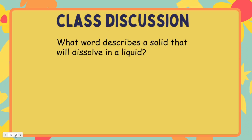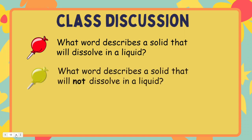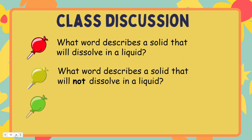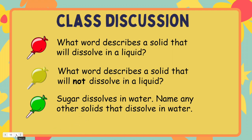Let's discuss. What word describes a solid that will dissolve in a liquid? We describe solids that dissolve in a liquid as soluble. What word describes a solid that will not dissolve in a liquid? We describe solids that do not dissolve in a liquid as insoluble. Sugar dissolves in water — can you name any other solids that dissolve in water? Sand does not dissolve in water, so sand is insoluble in water, just like flour and metal.